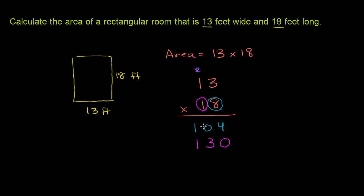So 18 times 13 is going to be the sum of these two numbers: 104 plus 130. 4 plus 0 is 4, 0 plus 3 is 3, 1 plus 1 is 2.